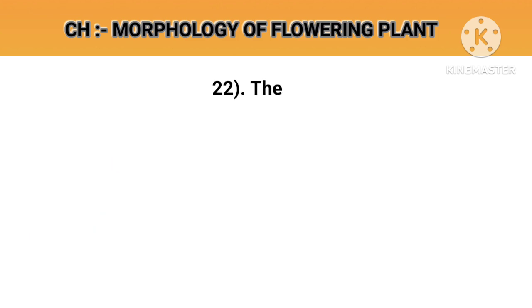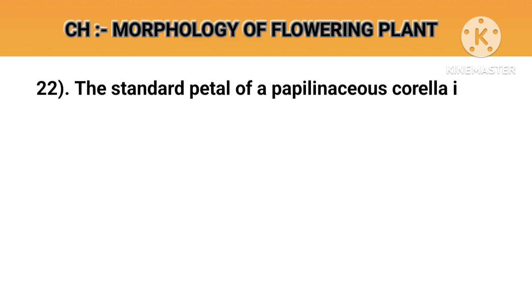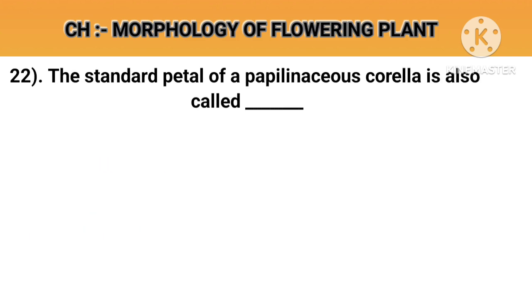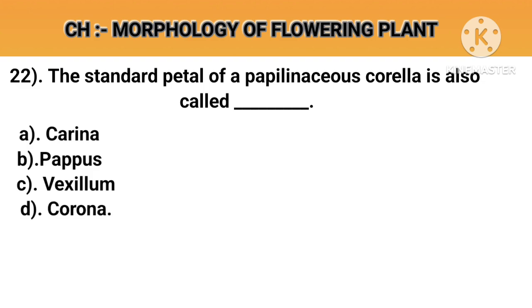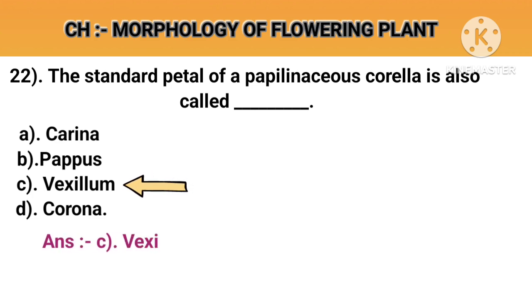Question number 22. The standard petal of a papilionaceous corolla is also called. Option A: Kareena. Option B: Papoose. Option C: Vexillum. Option D: Corona. Answer C: Vexillum.